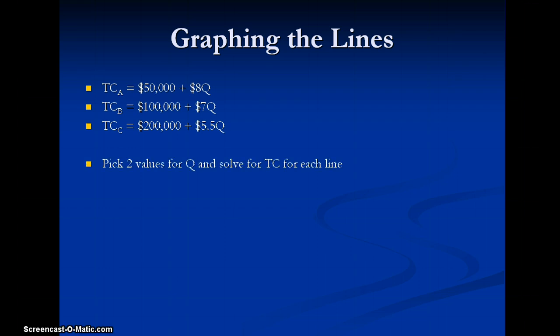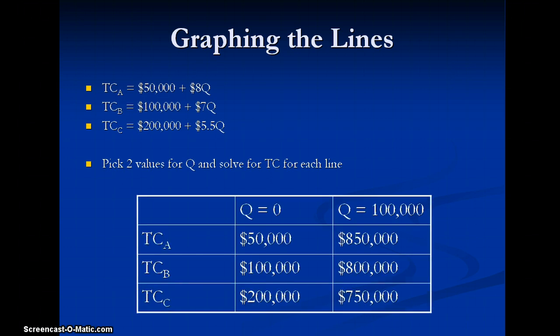So what we have here is the total cost which is like our y variable equals the fixed cost plus the variable cost times the quantity. So I've just chosen two quantities. The first one q equals 0 which is generally the easiest one to do. So for the total cost of A where q is 0, I'll put 0 into this q and it will be 50,000 plus 8 times 0 which is 50,000. So the total cost for C then, I'll put 0 in for q on this bottom equation and it will be 200,000 plus 5.5 times 0, and our total cost will be 200,000.